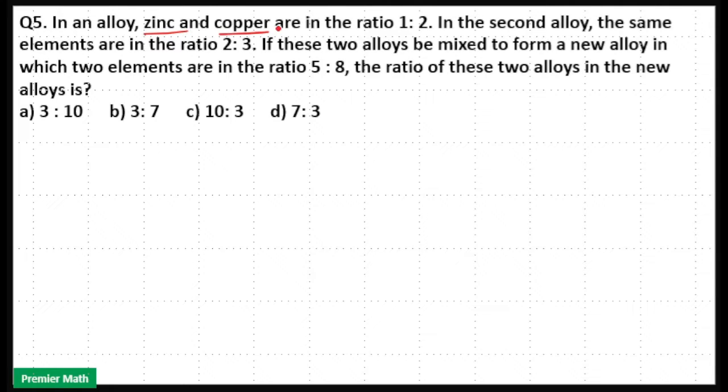In an alloy, zinc and copper are in the ratio 1:2. In the second alloy, the same elements are in the ratio 2:3. If these two alloys be mixed to form a new alloy in which two elements are in the ratio 5:8, the ratio of these two alloys in the new alloy is?